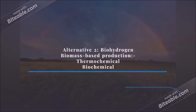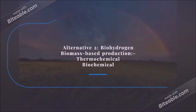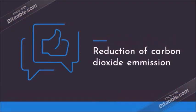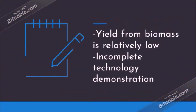Alternative number two: biohydrogen. It is produced from biomass through a thermochemical or biochemical process with, of course, lesser carbon dioxide. It is still not the best choice because of its low yield and incomplete technology in application.